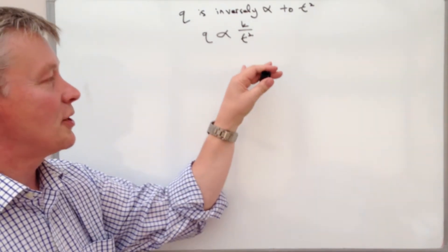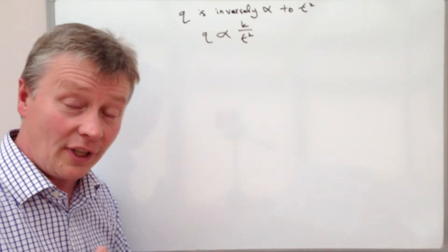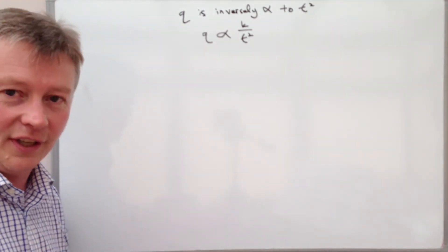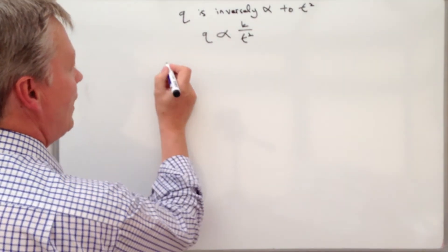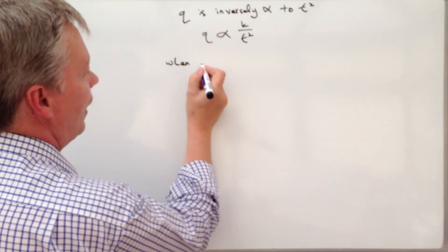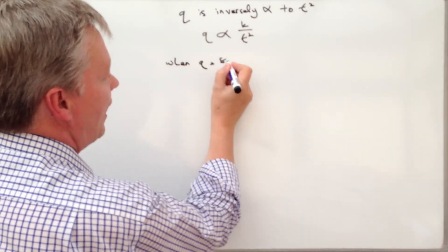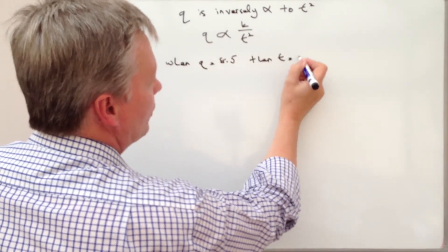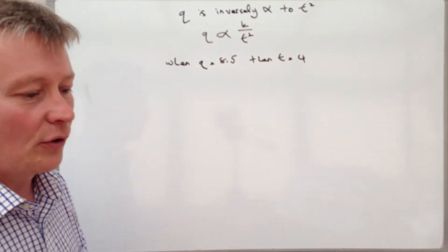So in this particular relationship, it just tells us that Q is inversely proportional to T squared, and the values that it gives us is that when Q equals 8.5, then T equals 4.